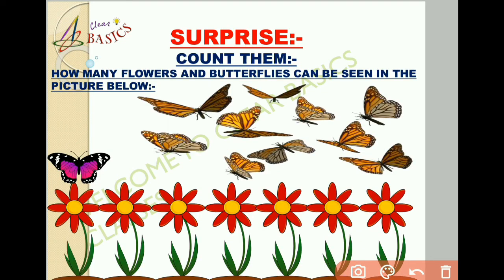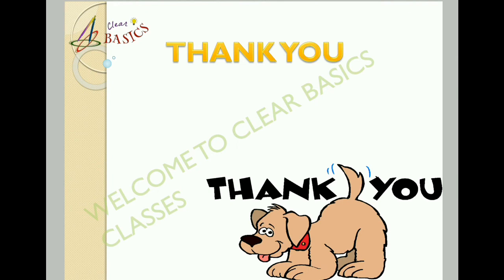Now guys, it's time to reveal the surprise. Here you can see colorful butterflies flying around a beautiful flower. So my little friends, type your answer in the comment box below — how many flowers and butterflies can be seen in the picture? Count and answer in the comment box. In my next video I will discuss the answer with you. Thank you guys for your love and support.